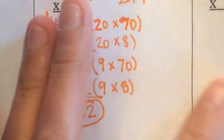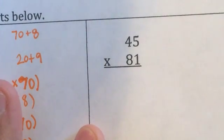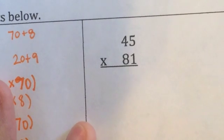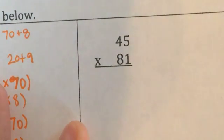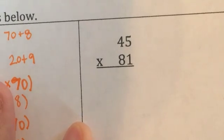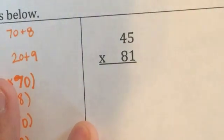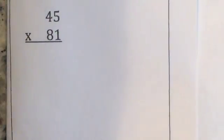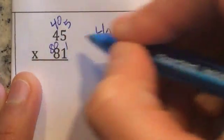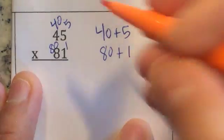Now for the last problem — I want you to solve it by yourself using partial products. Give it your best shot and see how far you can get. Please pause the video and do that now. Okay, I'm going to rearrange my paper a little so we can see better. If we break down 45, it would be 40 and 5 (or 40 plus 5). If we break down 81, it would be 80 and 1 (or 80 plus 1).